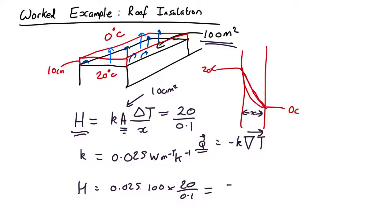which comes out as 500 watts. So even with insulating, you're losing 500 watts out the roof of your house, half a kilowatt.